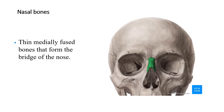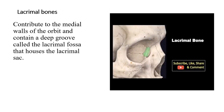The nasal bones are two tiny bones that help to form the bridge of the nose. The lacrimal bones contribute to the medial wall of the orbit and contain a deep groove called the lacrimal fossa. Lacrimal means tears — within there is a tear duct, and the tears would come through the lacrimal fossa.